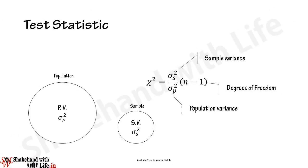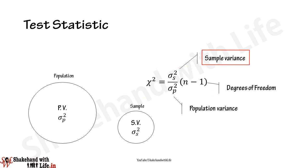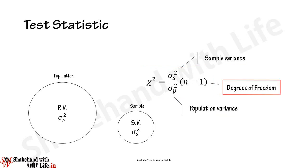The test statistic for calculating the value of chi-square is given by the equation: χ² = (σ_s² / σ_p²) × (n − 1), where σ_s² is the variance of the sample, σ_p² is the variance of the population, and (n − 1) is the degrees of freedom, with n being the number of items in the sample.